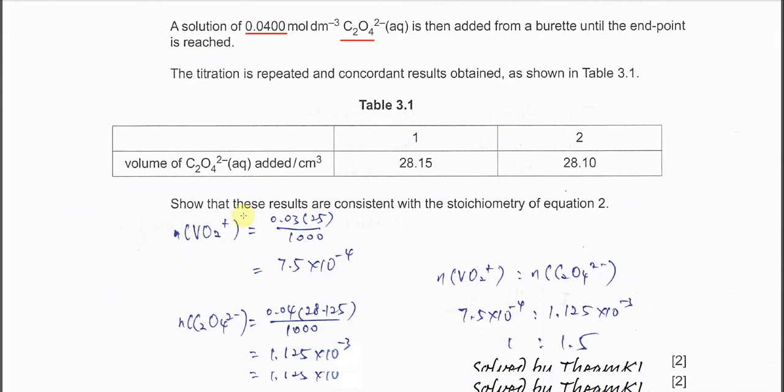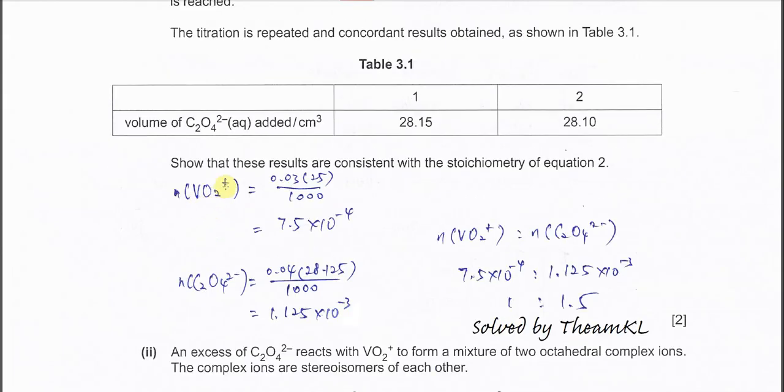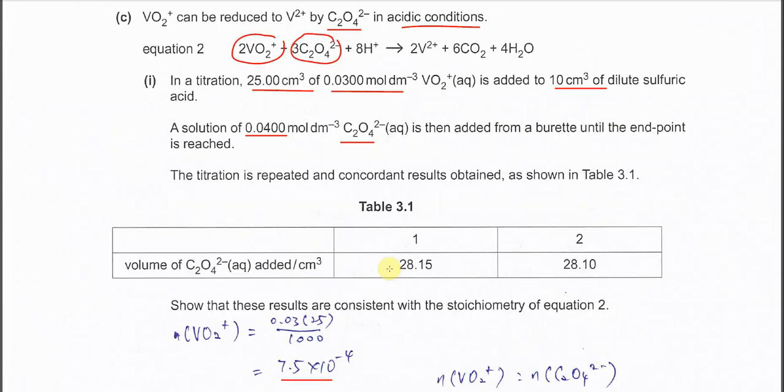First we calculate the moles of VO²⁺. MV over 1000, so we get 7.5 times 10⁻⁴. After that, we calculate the moles of C₂O₄²⁻. MV over 1000, we get the average value, 1.125 times 10⁻³. Then we compare these two moles. So we get 1 to 1.5 or 2 to 3. So it's consistent with equation 2.